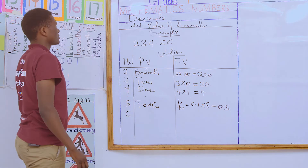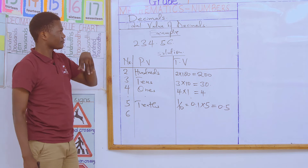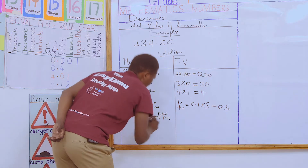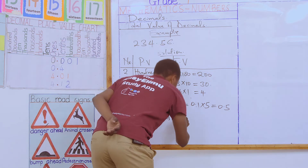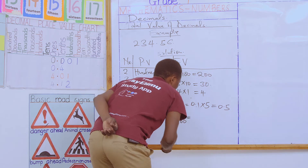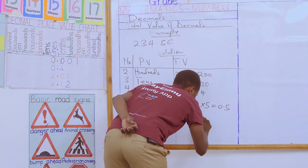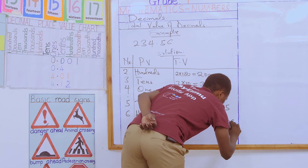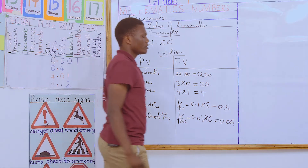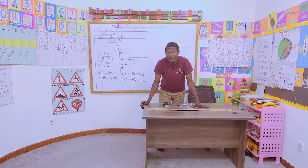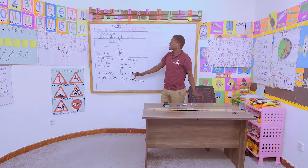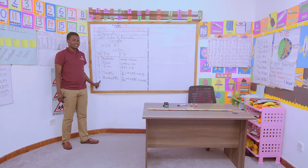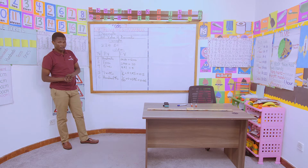The next digit is 6. What is the place value of 6? Hundredths — correct. So after tenths we go to hundredths. Hundredths in fraction notation is written as 1 over 100, and in decimal notation is 0.01. Then we multiply that by the digit, which is 6, and its total value becomes 0.06. So that is how we get the total value of decimal numbers. You need to appreciate how to write the place values numerically, then multiply that numerical place value by the digit in that particular position.